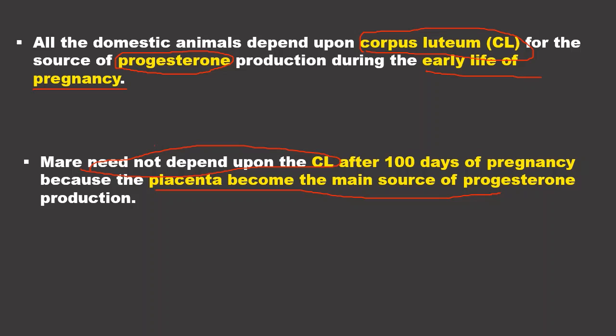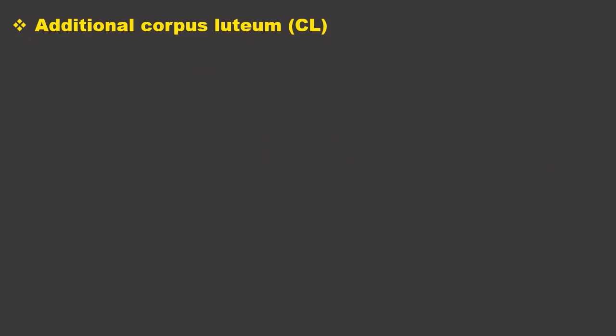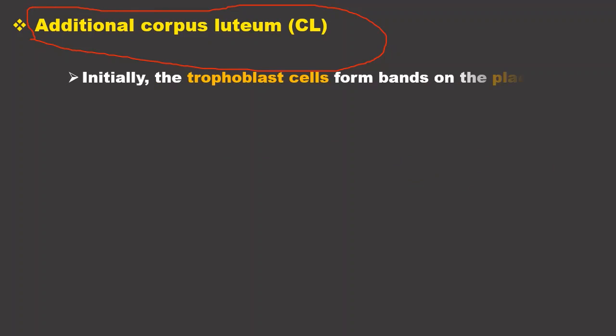In this lecture, we will focus on the period from conception to 100 days, examining what events occur in the mare for the establishment and maintenance of pregnancy. Mares produce additional corpus luteum, and these are produced by the secretory products of trophoblast cells.